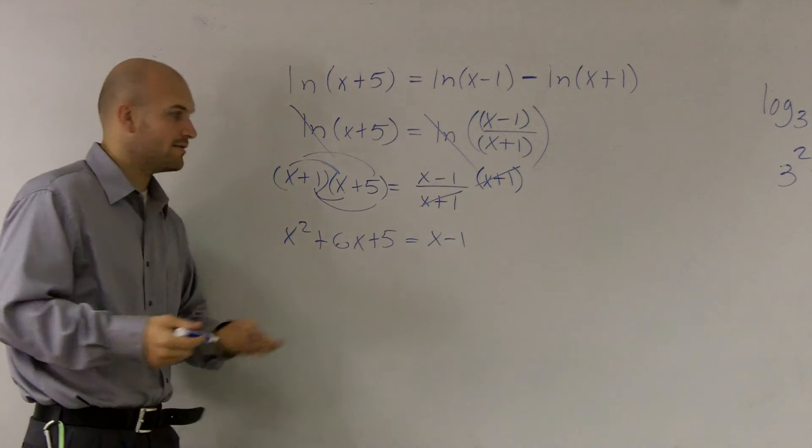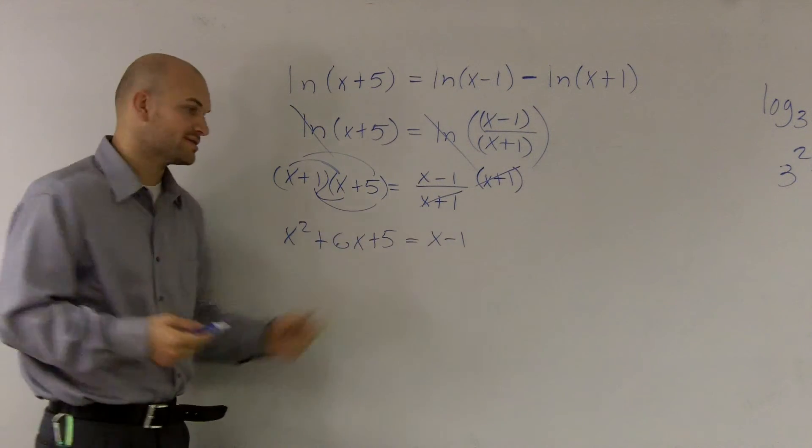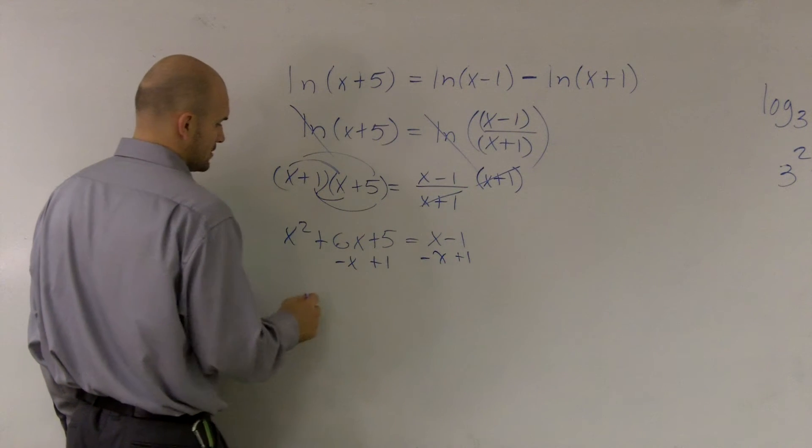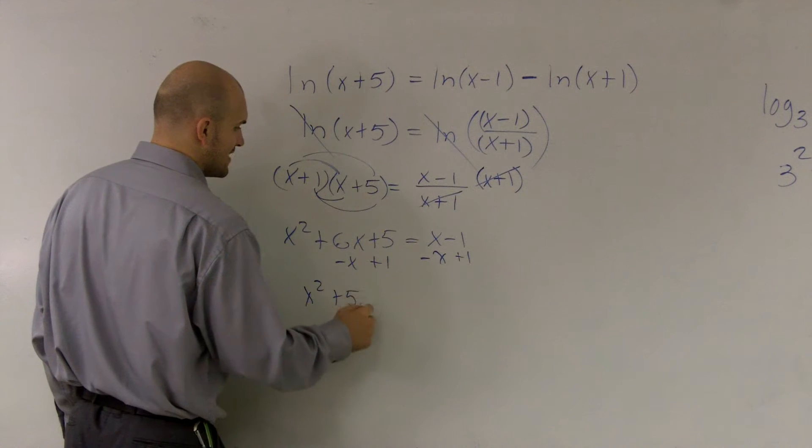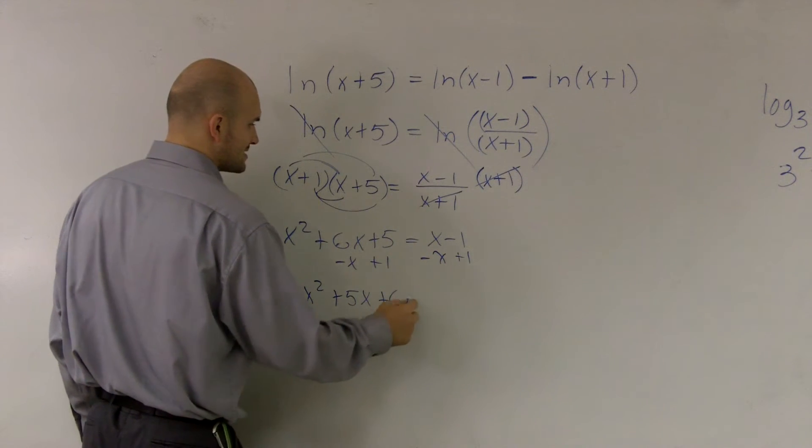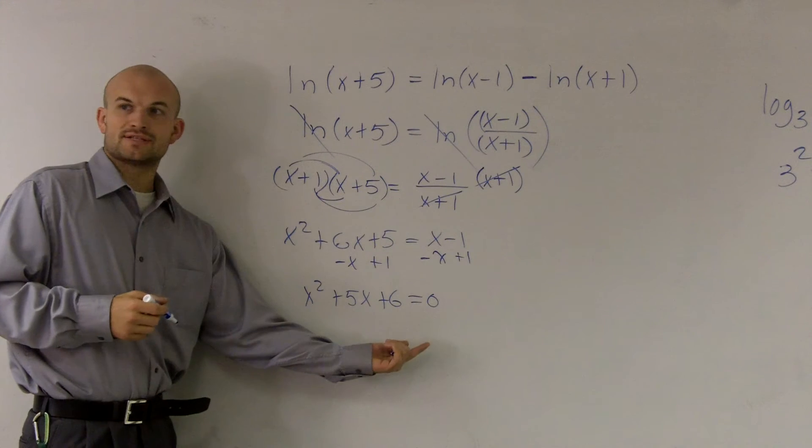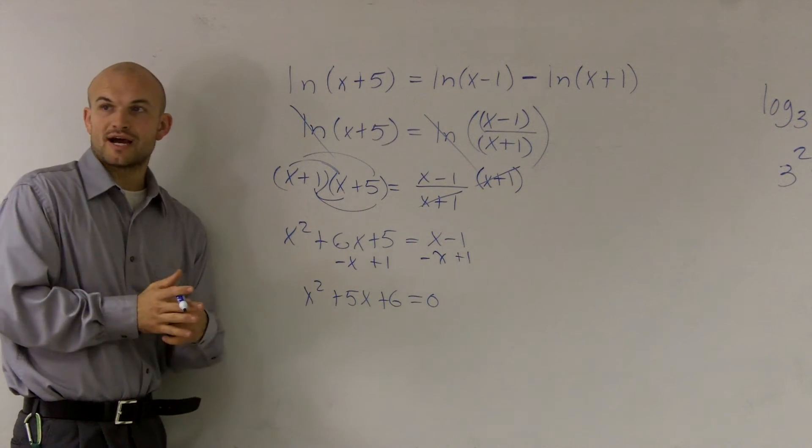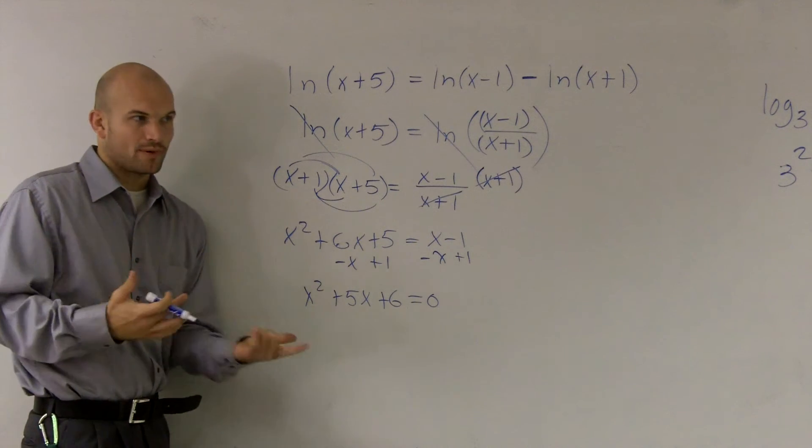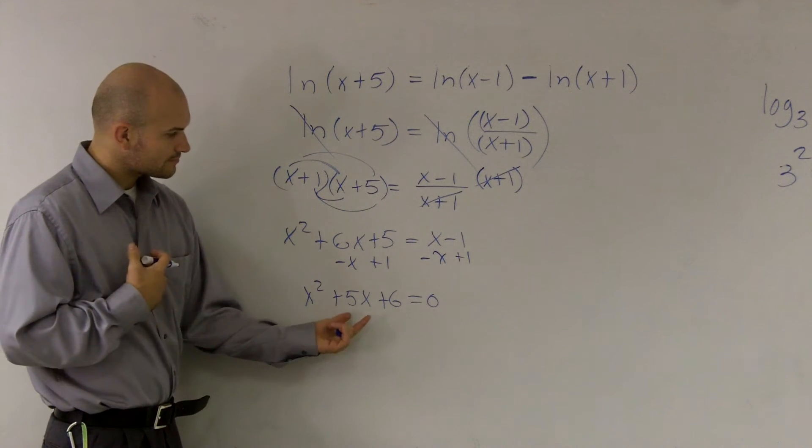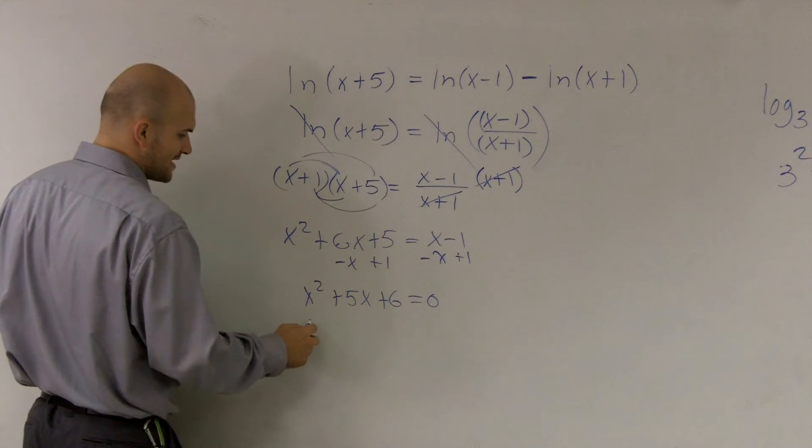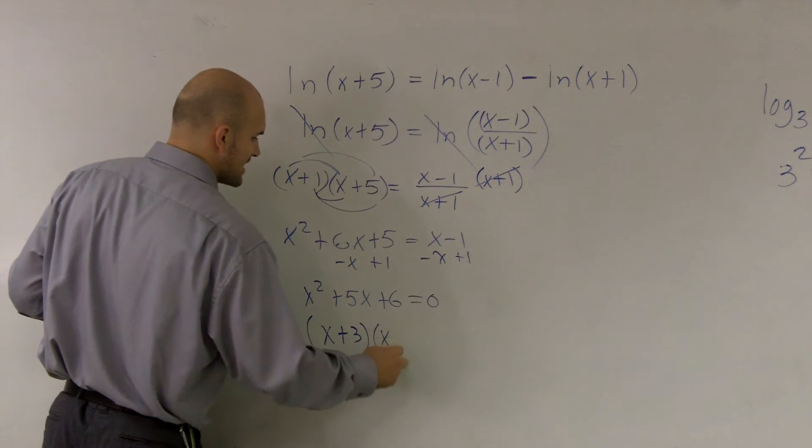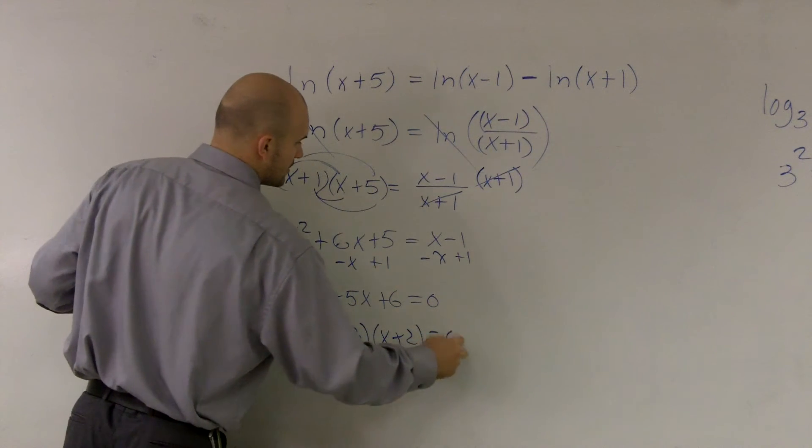So let's look to factor first. And whenever factoring, we want to set it equal to 0. So I'll subtract an x and add a 1. I get x²+5x+6=0. Now since I have them set equal to 0, if I factor them, I'll have a set of linear factors which are equal to 0, so I can use the 0 product property and solve for 0. When I factor this, you get (x+3)(x+2)=0.